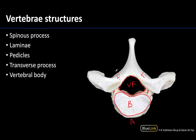What else we're going to have you identify are processes, and these processes are important in terms of muscle attachments. In the thoracic region specifically, you'll also have ribs attaching here. You'll have two lateral projections — these are the transverse processes. And then the most posterior projection will be the spinous process. Those are the ones that if you palpate down the middle of your back, you are feeling these spinous processes all the way down.